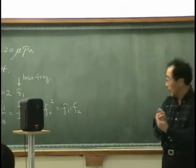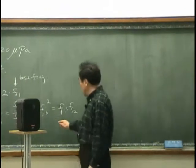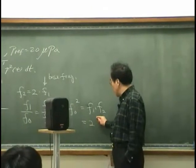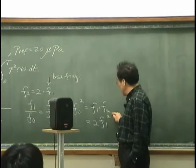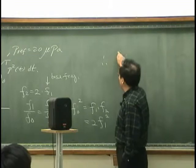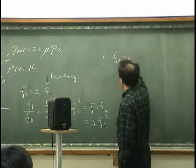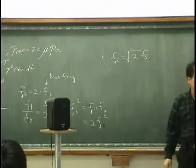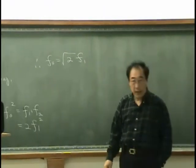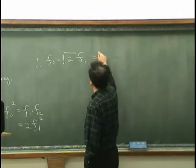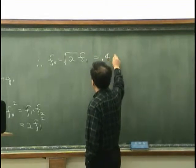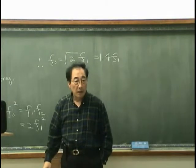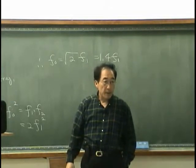Knowing that F2 is 2 times of F1, therefore we can write this is F1 square. Therefore, I can write F0 is equal to square root 2, F1. And that is approximately 1.4 F1.